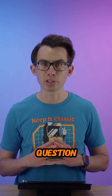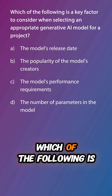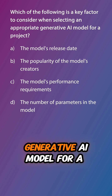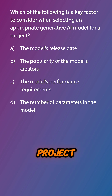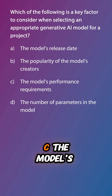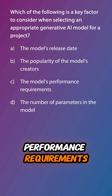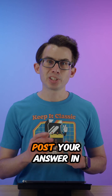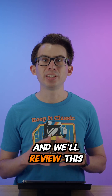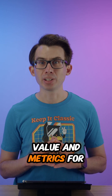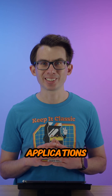Let's do a review question. Which of the following is a key factor to consider when selecting an appropriate generative AI model for a project? Is it A, the model's release date? B, the popularity of the model's creators? C, the model's performance requirements? Or D, the number of parameters in the model? Post your answer in the comments and we'll review this in the next episode where we talk about the business value and metrics for generative AI applications. See you then.